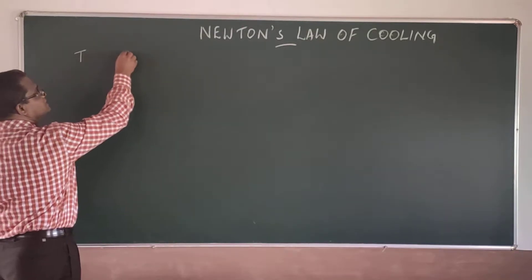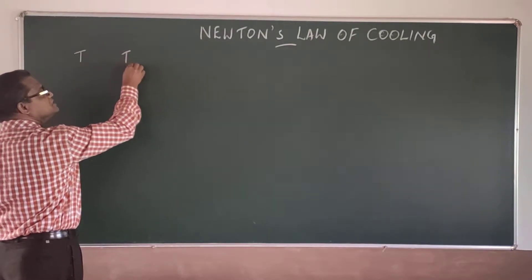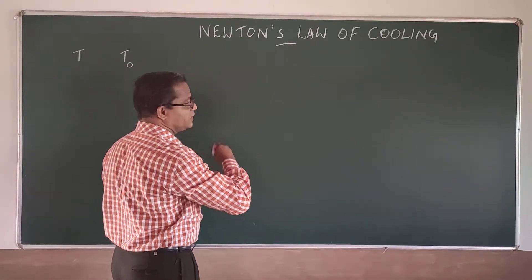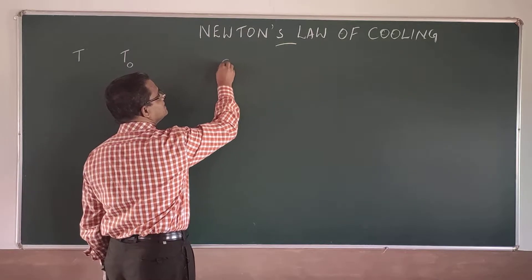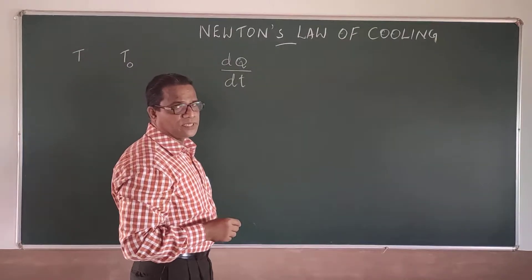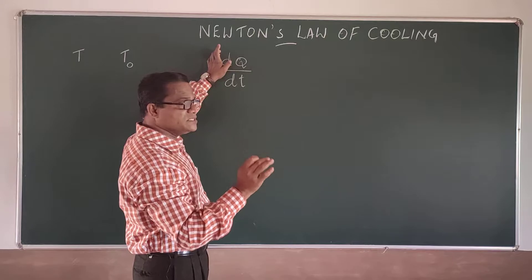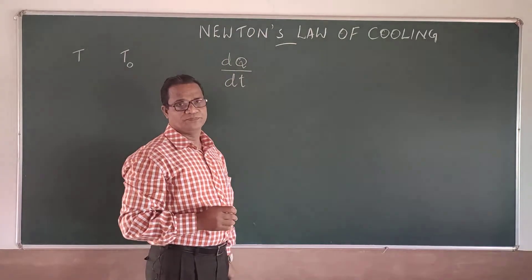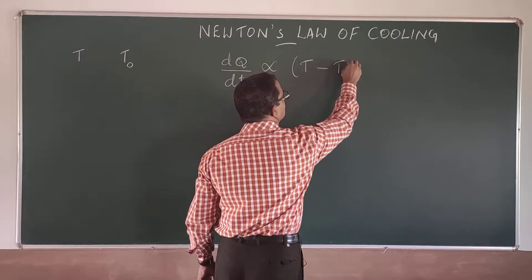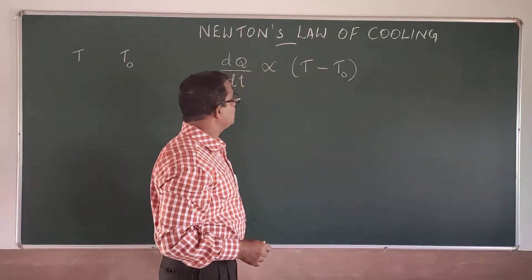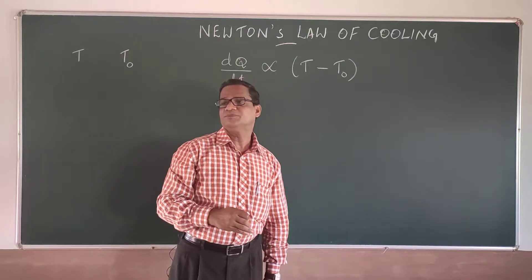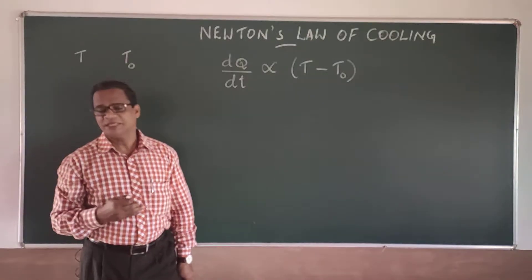The surroundings temperature is T₀. Then the rate of cooling, dQ by dT — the heat energy released with respect to time — is directly proportional to T minus T₀. This is what Newton's law of cooling states. Now we want to obtain this condition using Stefan-Boltzmann's law.